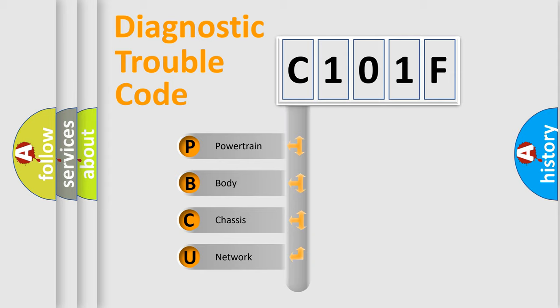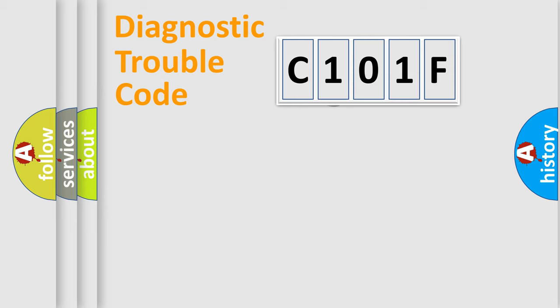We divide the electric system of automobile into four basic units: Powertrain, Body, Chassis, and Network. This distribution is defined in the first character code.